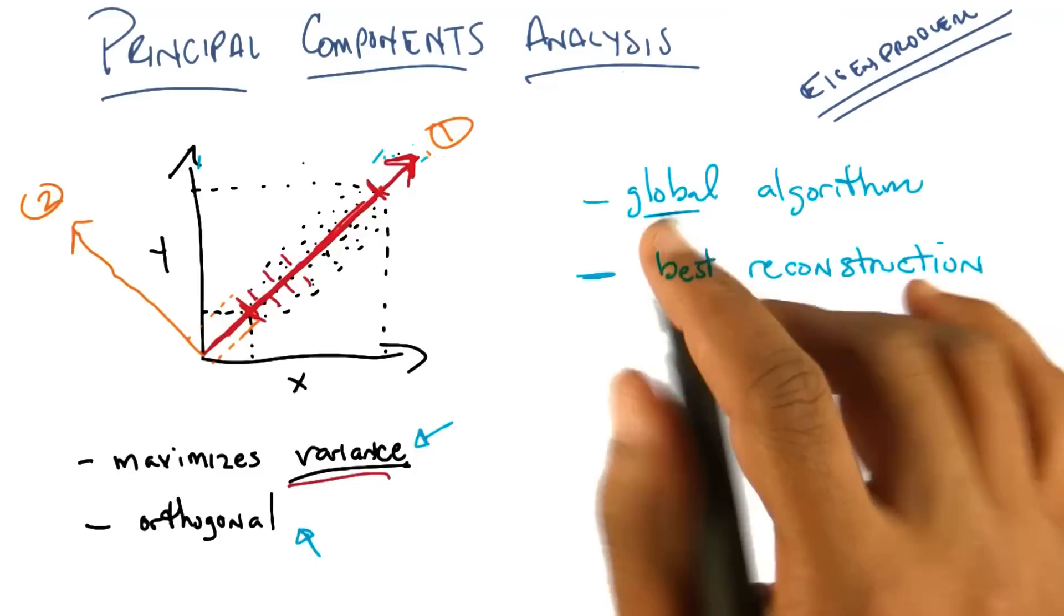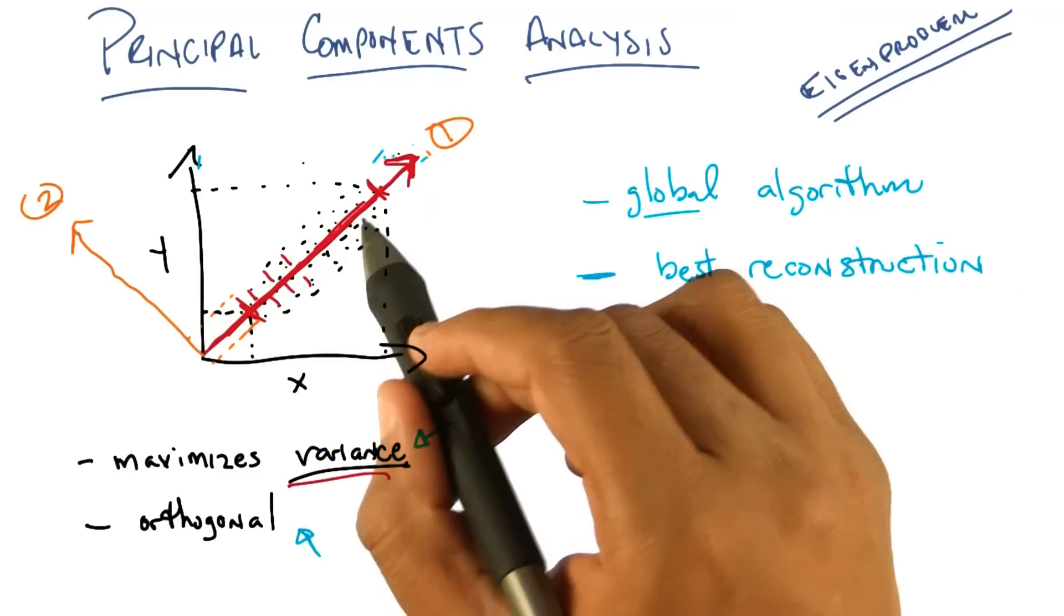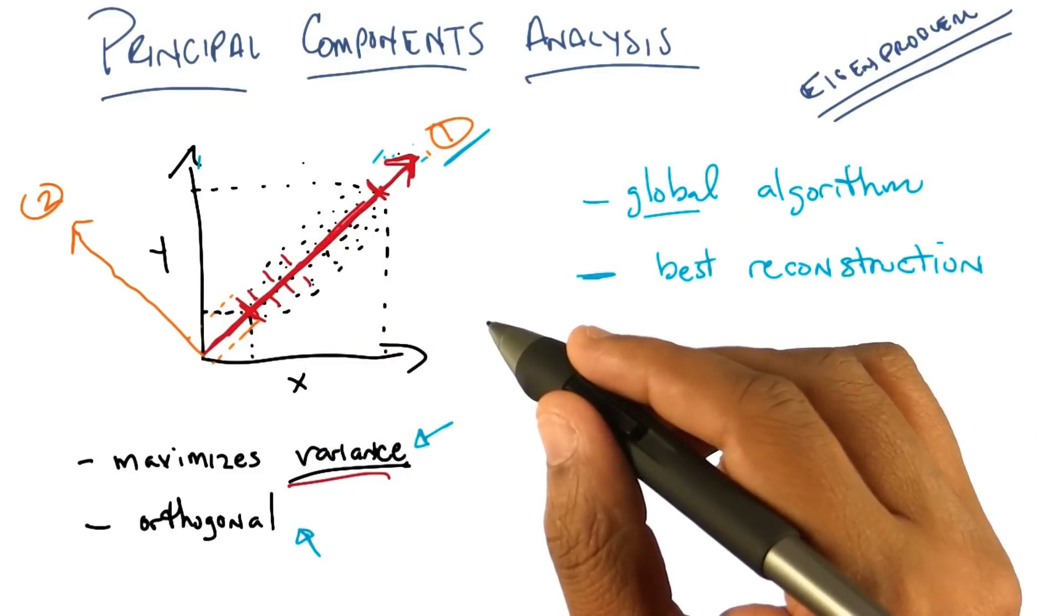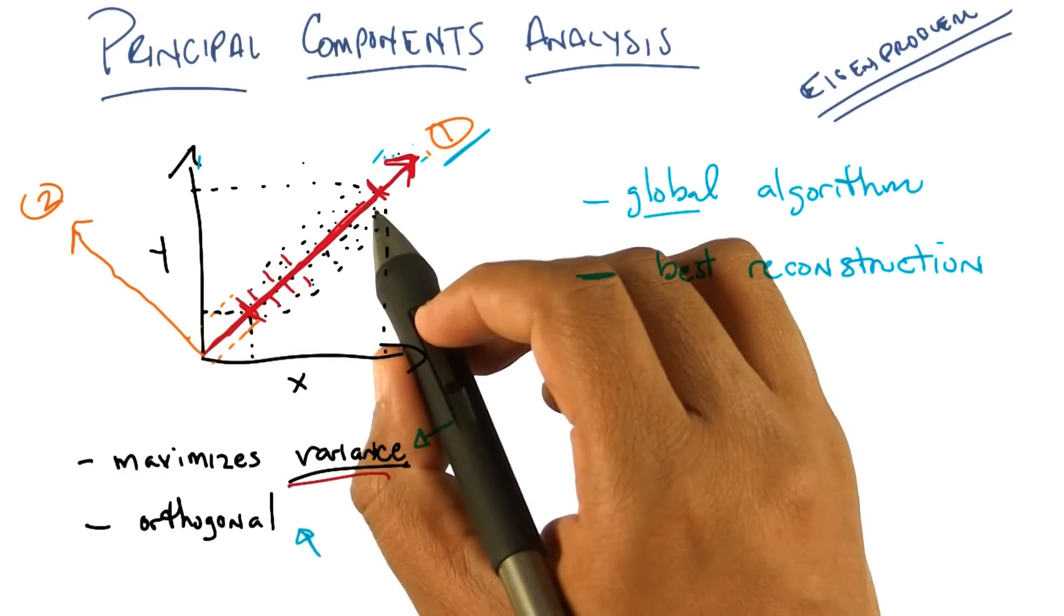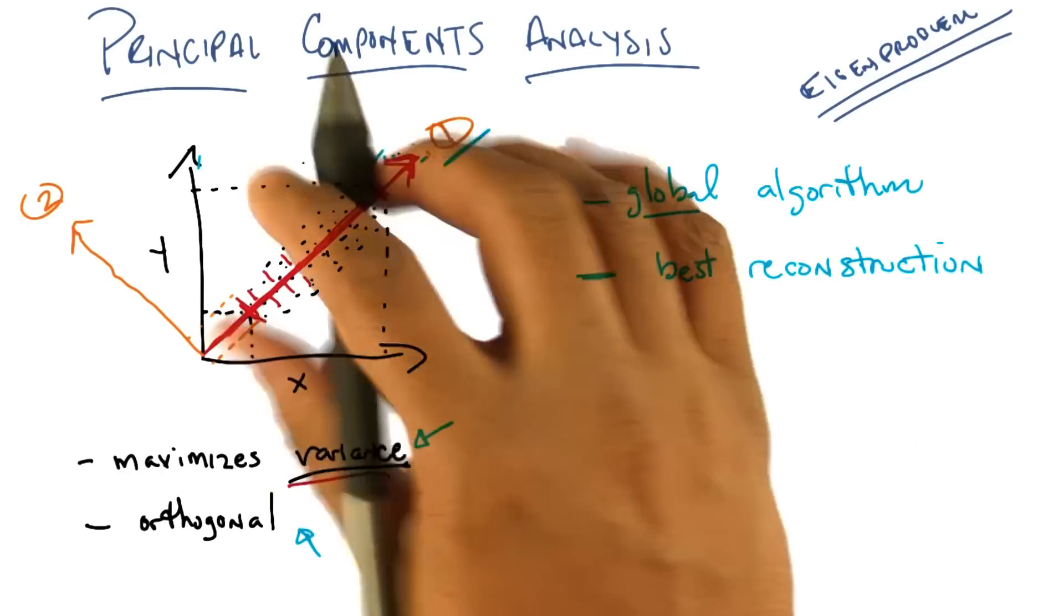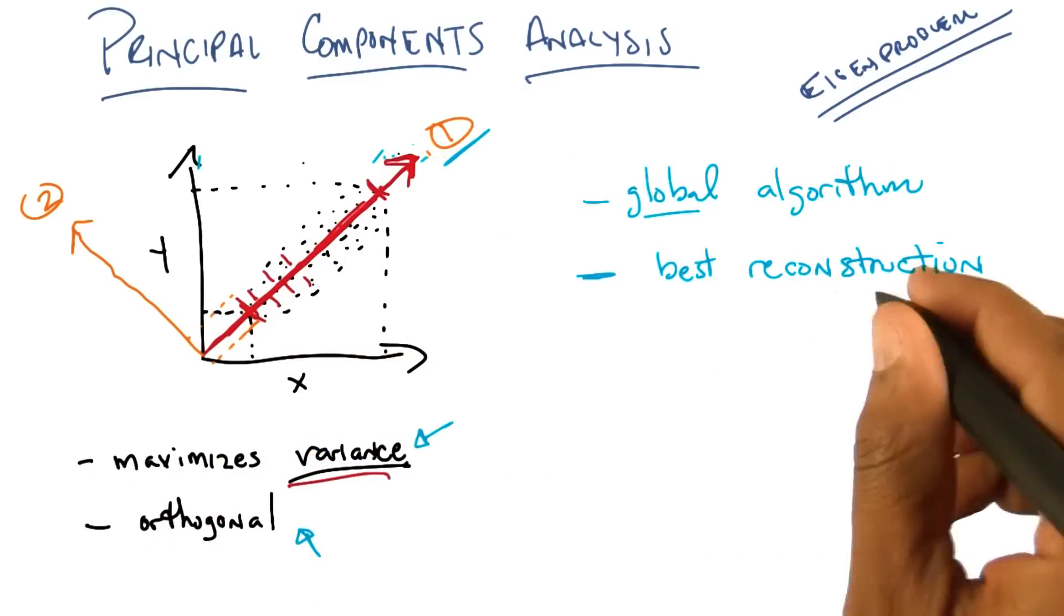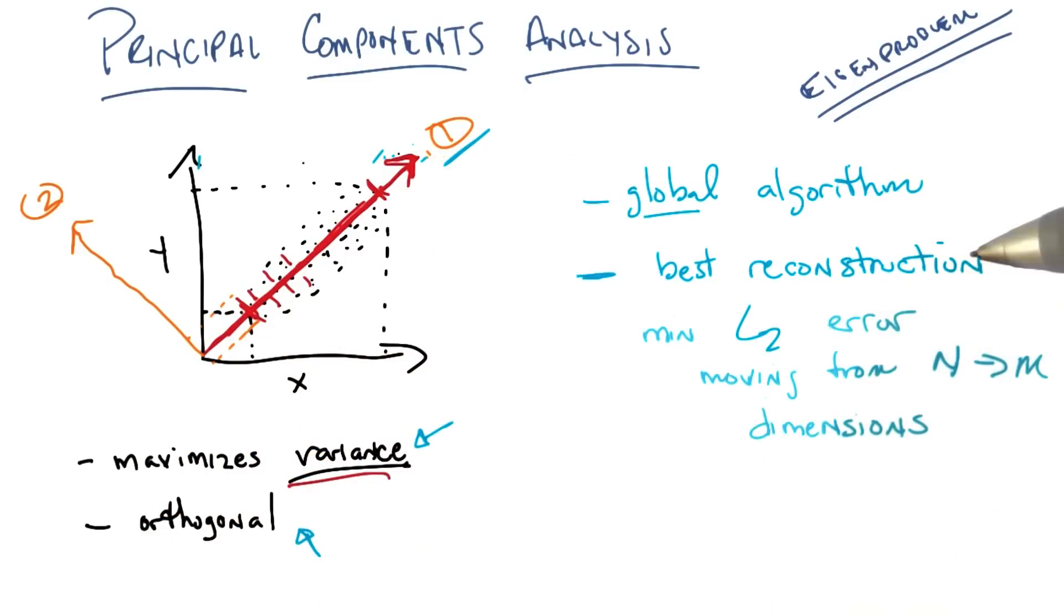But what principal components analysis does for you, is if I take just one of these dimensions, in particular, the first one, the principal component, I am guaranteed that if I project only into this space, and then try to reproject into the original space, I will minimize what's called L2 error. So do you understand that?